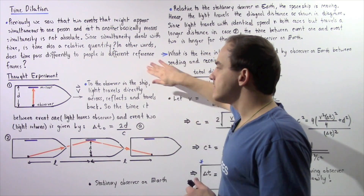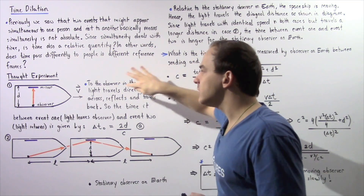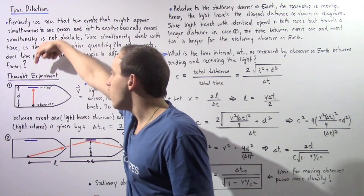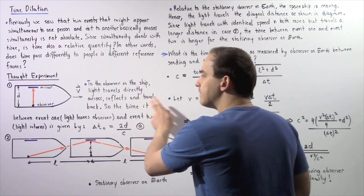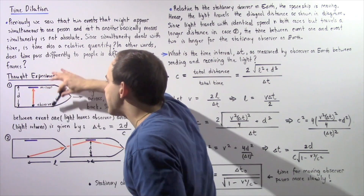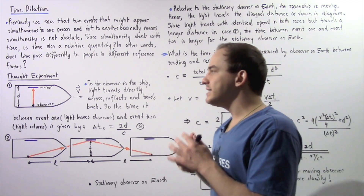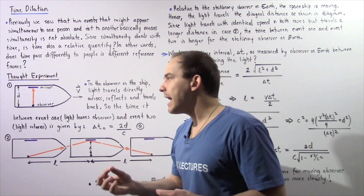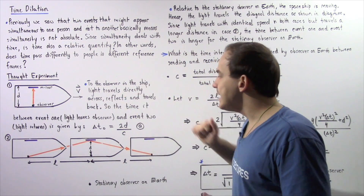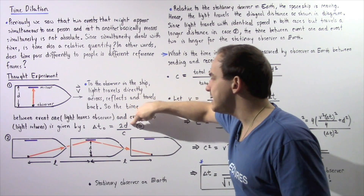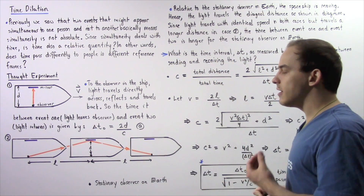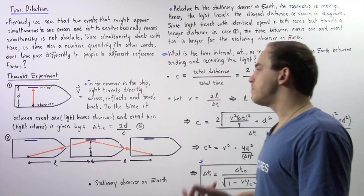To the observer inside the spaceship, light travels directly across, reflects off the mirror, and travels directly back. So the time between event one and event two is found by taking the total distance traveled by the light and dividing by the speed of light. This change in time, T naught, which is known as the proper time, is equal to 2D divided by C, where 2D is the distance there and back, and C is the speed of light — a constant according to Einstein's special theory of relativity.